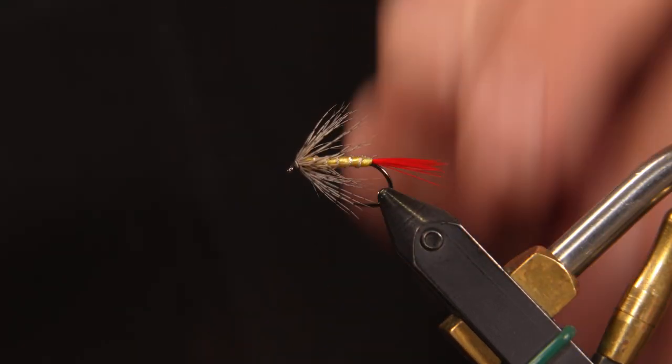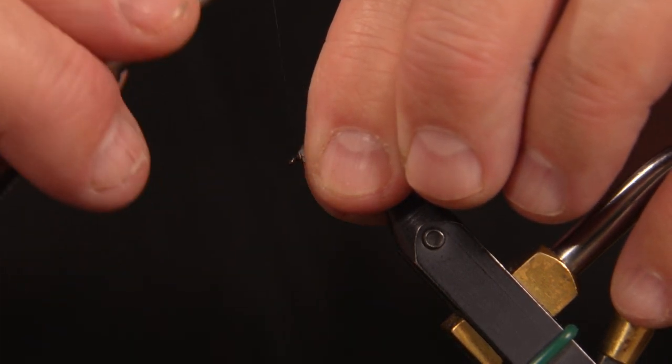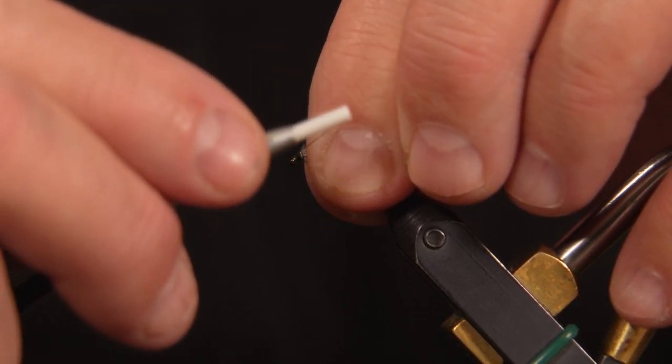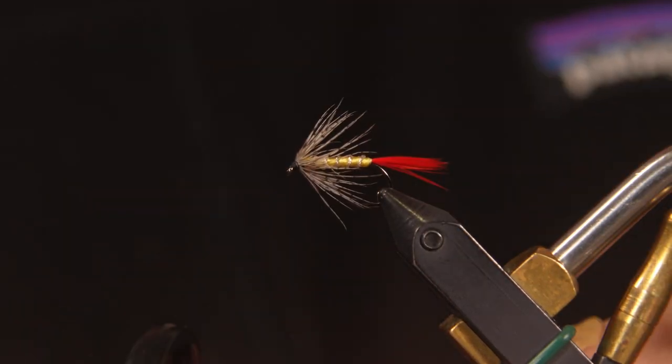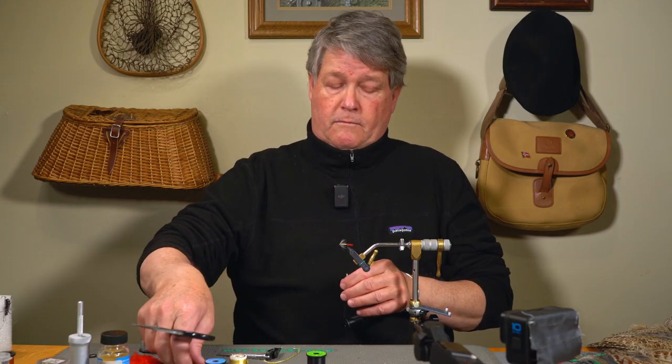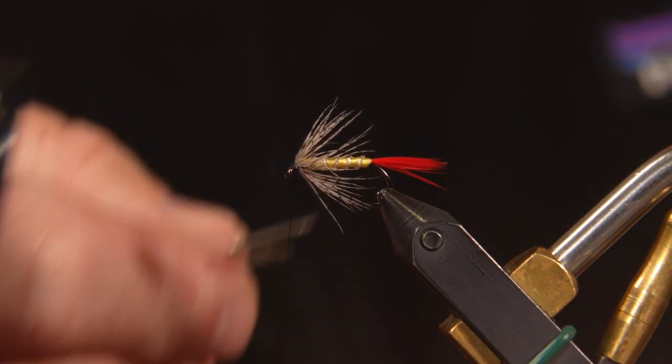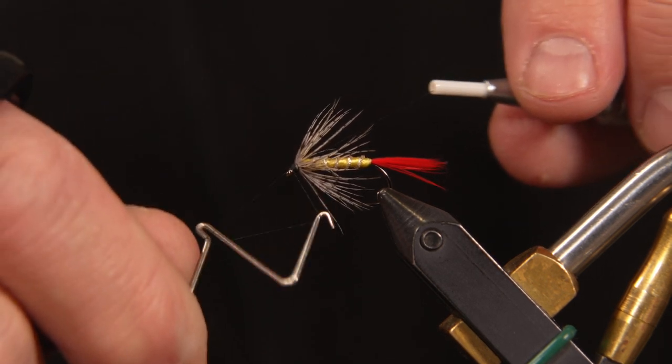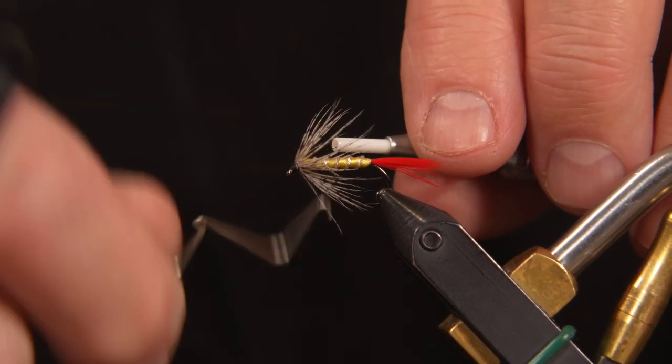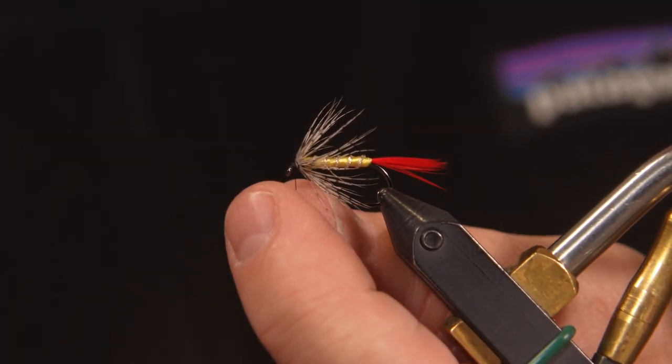And this is where having your bobbin close to the eye of the hook can really give you a lot of good control over where those thread wraps are laid. Reach in with my whip finisher and wrap two or three wraps. And that helps finish the fly.